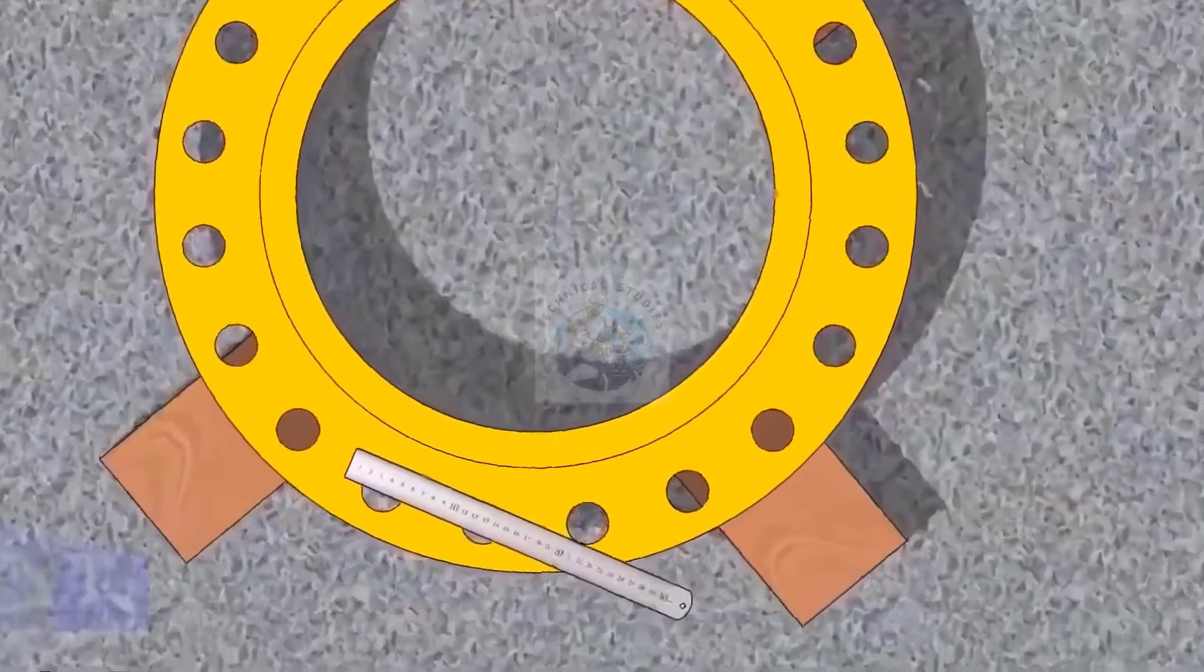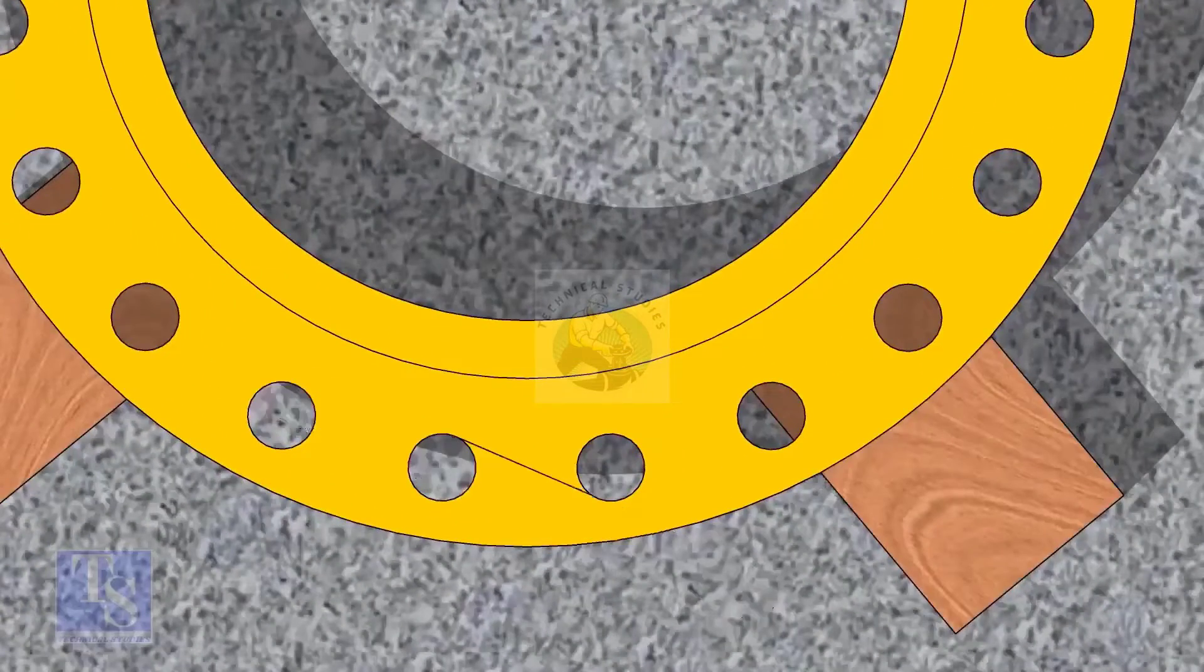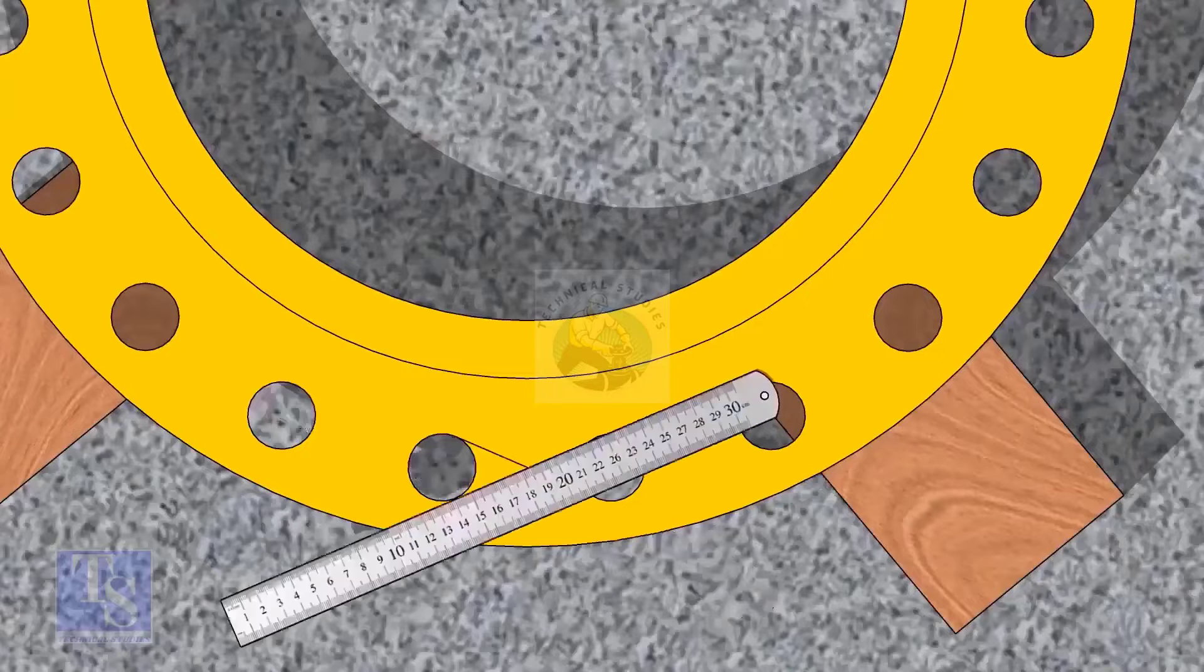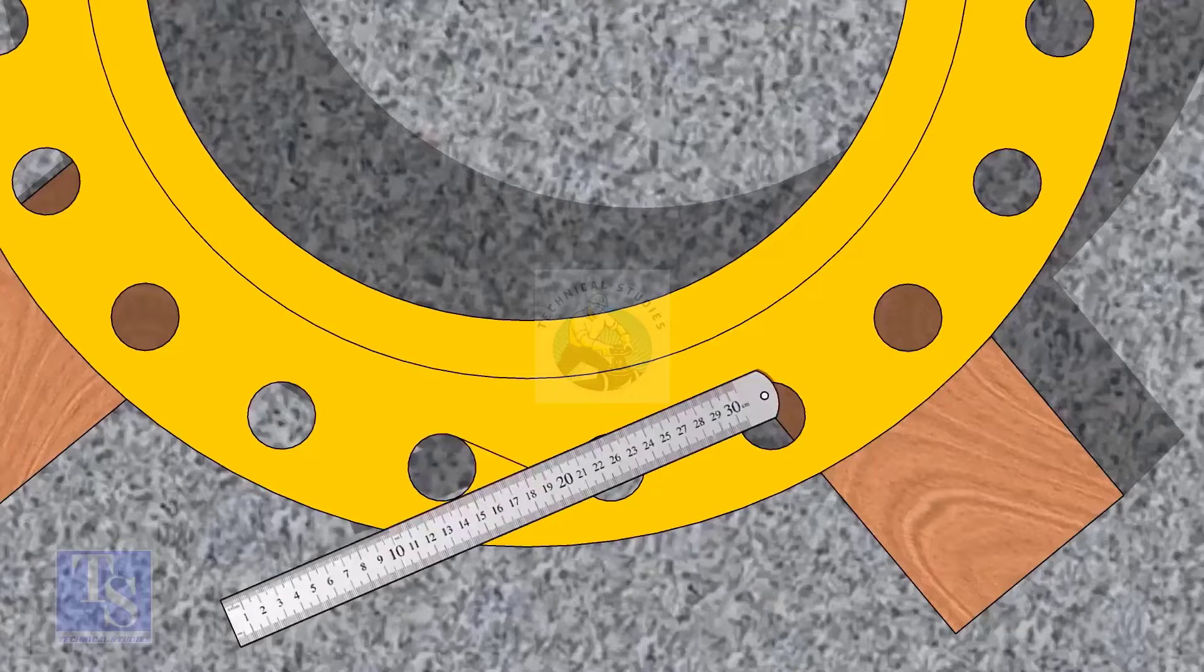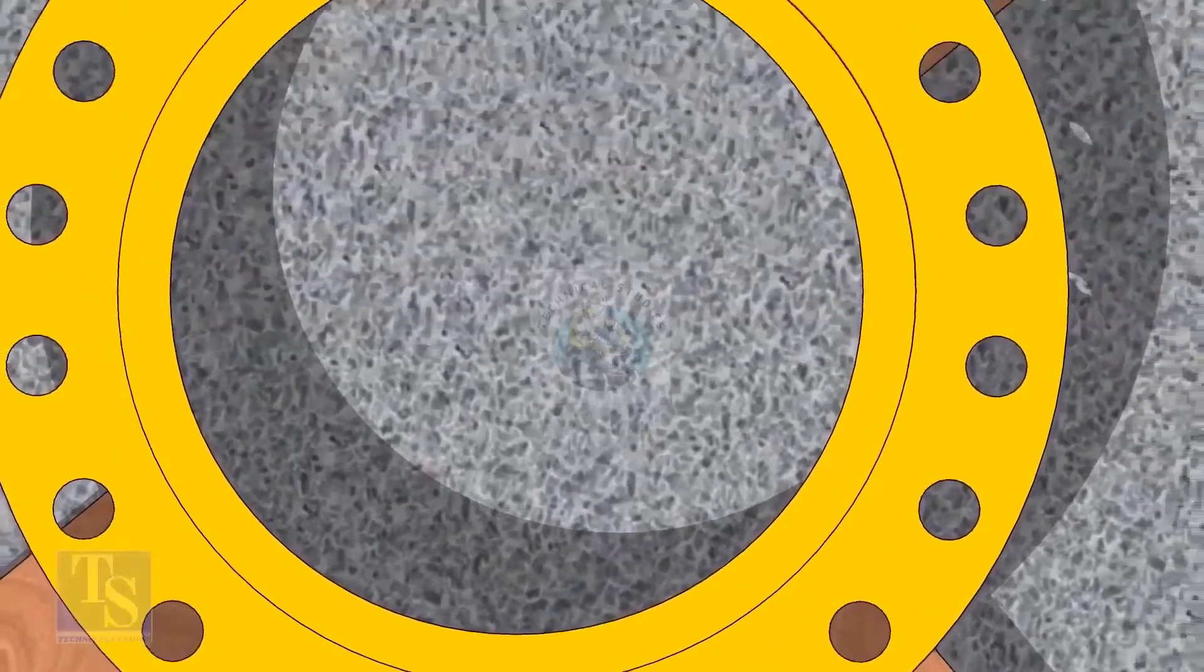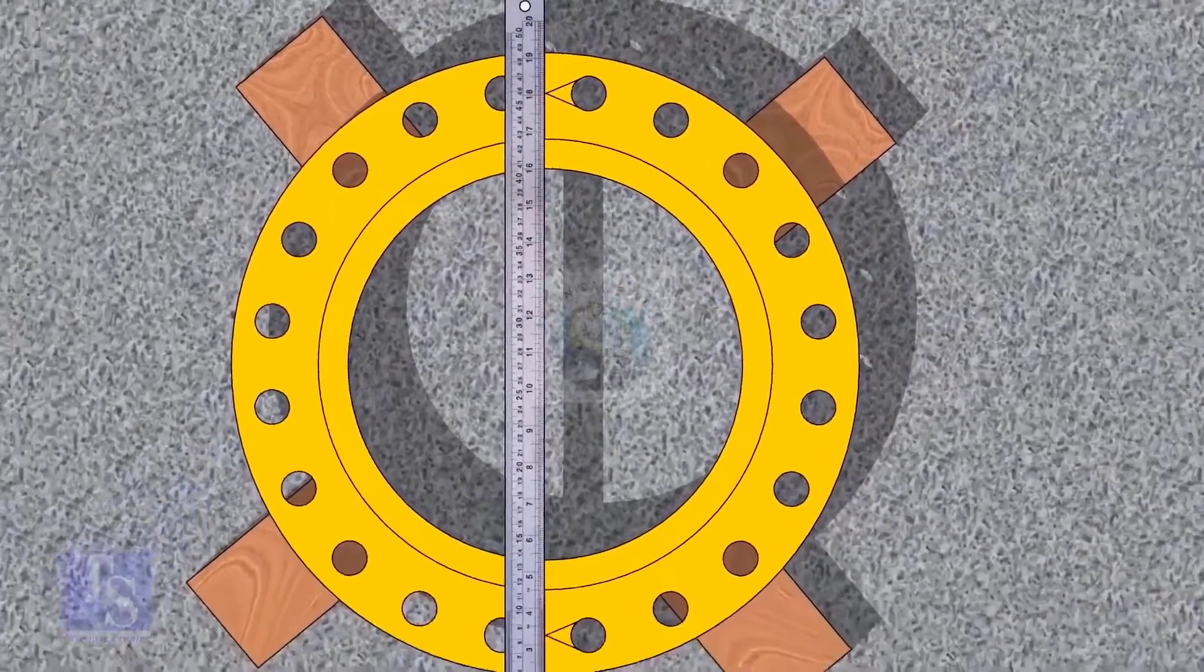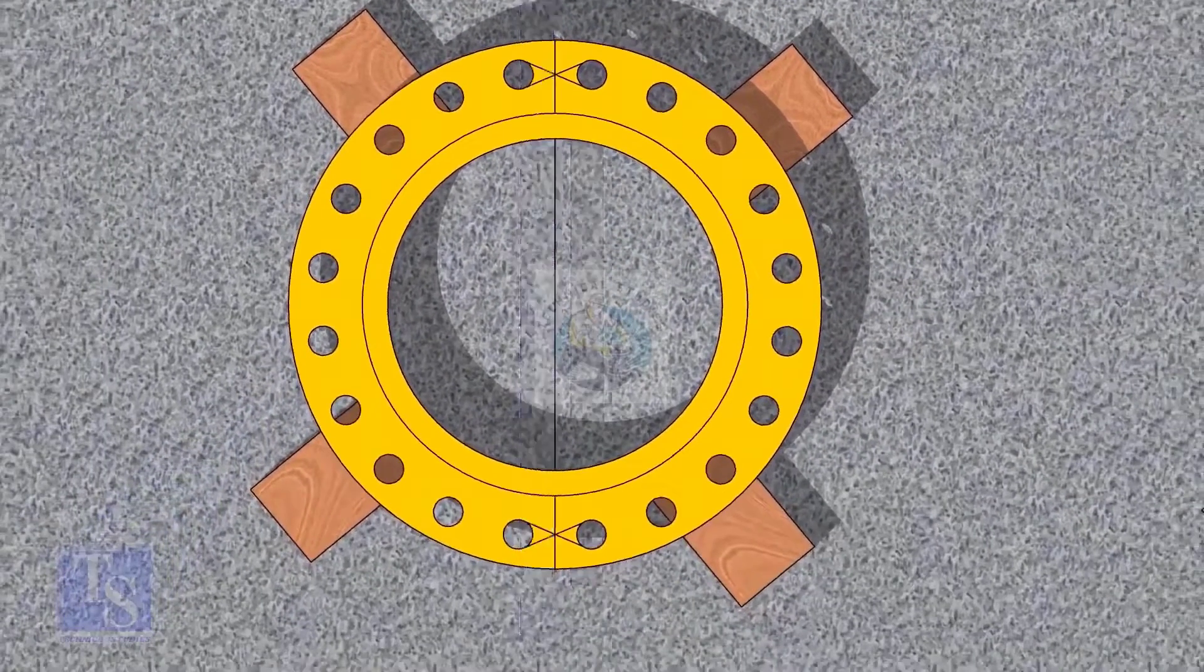Let us mark the center line of the flange. Draw tangential lines of two adjacent holes. The intersection of the lines is the center of these holes. Draw the center of the two holes on the opposite side. Draw the center line of the flange as shown.